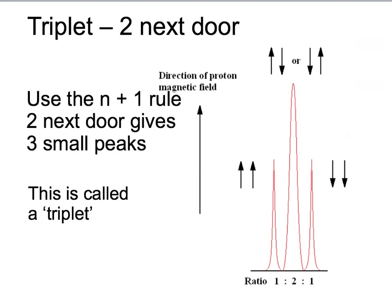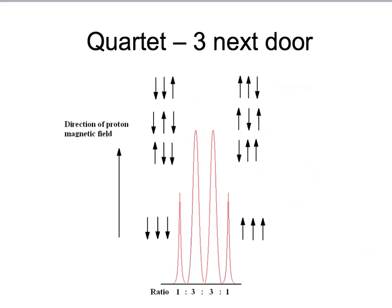We can then derive what we call the n plus one rule from this. If there are n protons next door, then the peak will be split into n plus one little peaks. So, if there are three next door, again, there is only one way that they can all be opposed. There are three different ways in which they can be two against and one with. And three more different ways one can be against and two with. And then one way only that all three can be with the magnetic field. And this gives us four peaks in the ratio one to three to three to one. We call this a quartet.